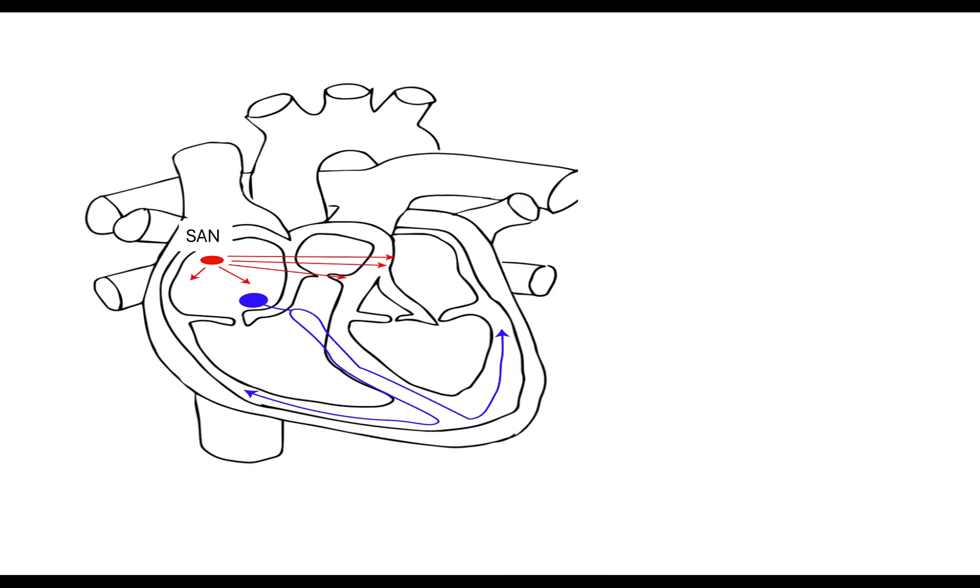So you should know that you have got your sinoatrial node which is located in your right atrium. That sinoatrial node is going to send electrical impulses across the atria causing the atria to contract at the same time, atrial systole. That impulse then is sent onto the atrioventricular node, the AVN and it will then be passed down through the bundle of His, the Purkinje fibres and the conducting fibres for the heart to contract from the apex, squeezing the blood out of the ventricles into the arteries.